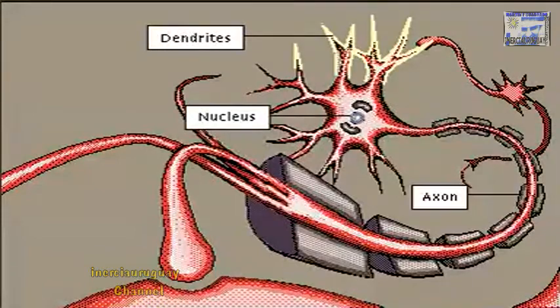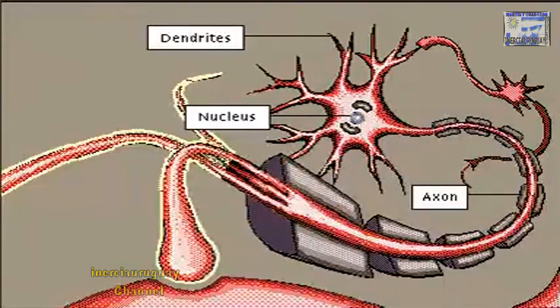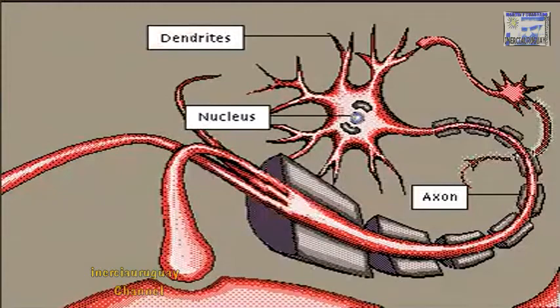A nerve signal is received by the neurons' dendrites and travels along the axon, a thin tube up to 3 feet long.